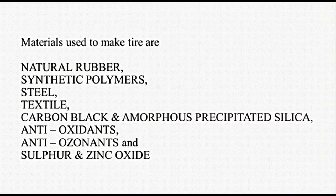Materials used to make tyres are: natural rubber, synthetic polymers, steel, textile, carbon black and amorphous precipitated silica, antioxidants, anti-ozonants, and sulphur and zinc oxide.